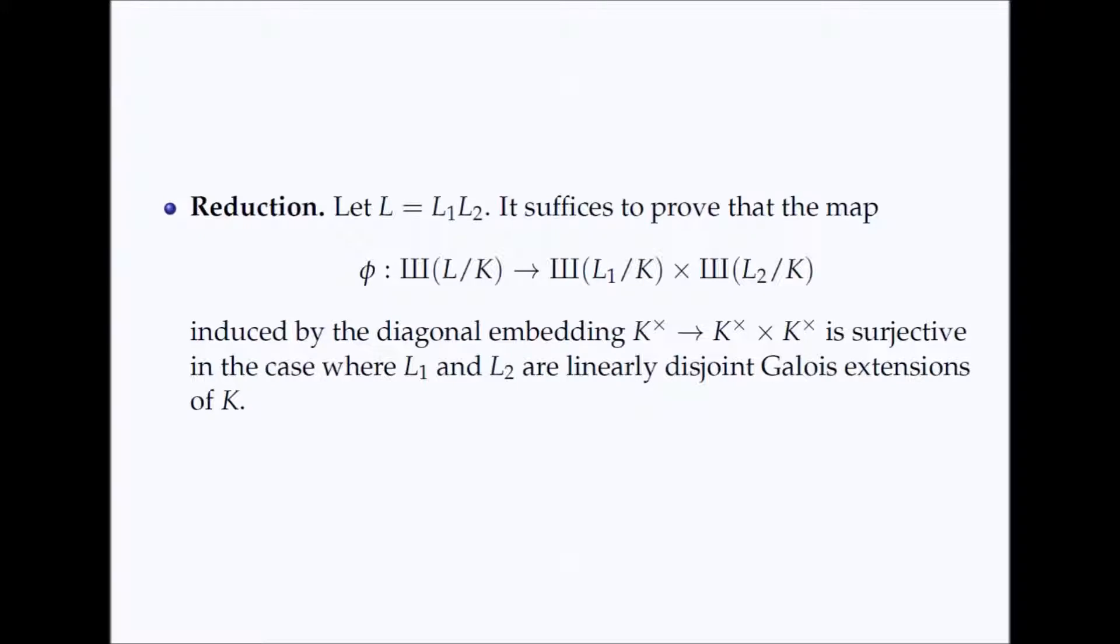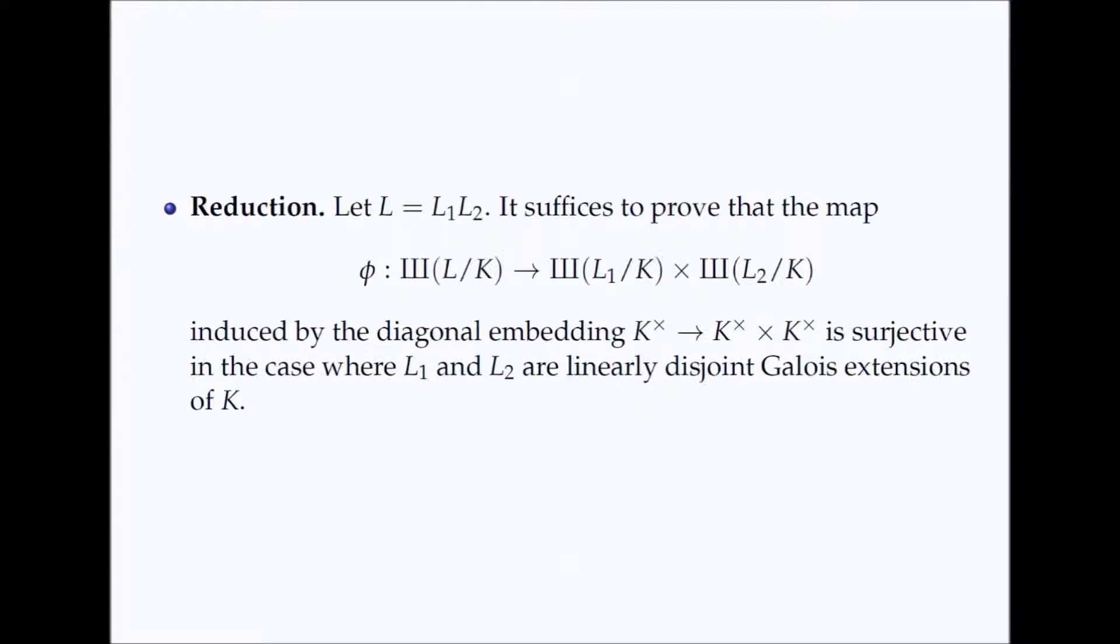The map phi has a cohomological description as well. There is a map in cohomology called the deflation map, whose construction is dual to that of the inflation map. And it turns out that the map we are interested in, phi, is induced by a product of deflation maps.